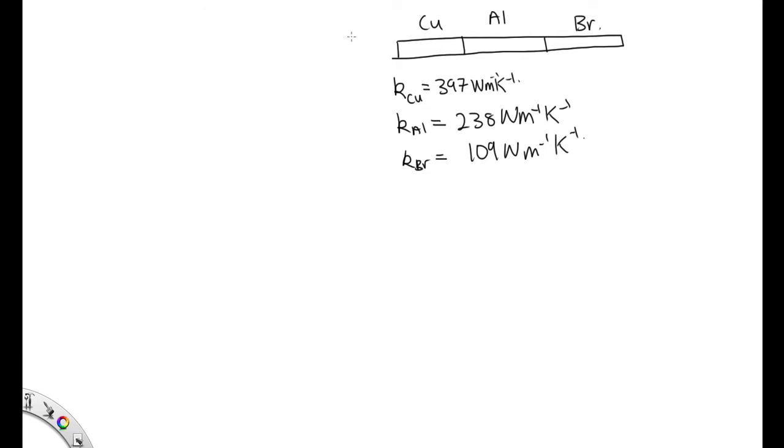This end is the hot end at 100 degrees C. This end's the cold end at 0 degrees C. Let's call this temperature of junction 1, TJ1, and this one temperature of junction 2, TJ2. Part A is asking us to find TJ1. Part B is asking us to find TJ2.